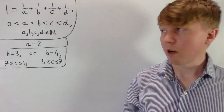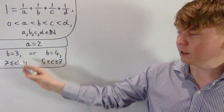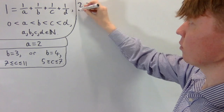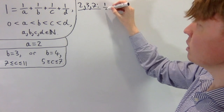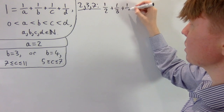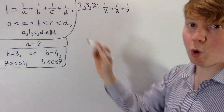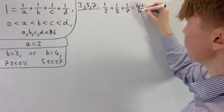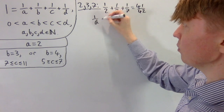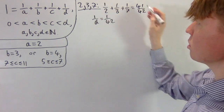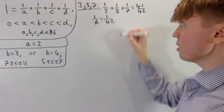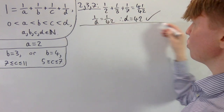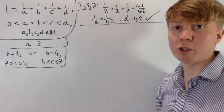Now we get to generate some examples. We'll start with a is two, b is three, c is seven — shorthand: (2, 3, 7). We need one half plus one third plus one seventh, which equals 41 over 42. So one over d has to be the remaining one over 42, meaning d equals 42. So (2, 3, 7, 42) is our first solution.